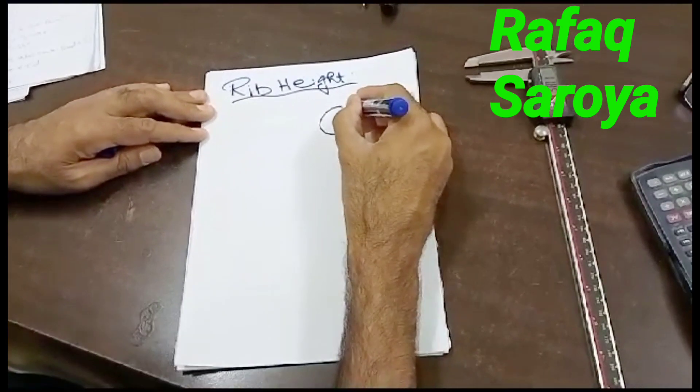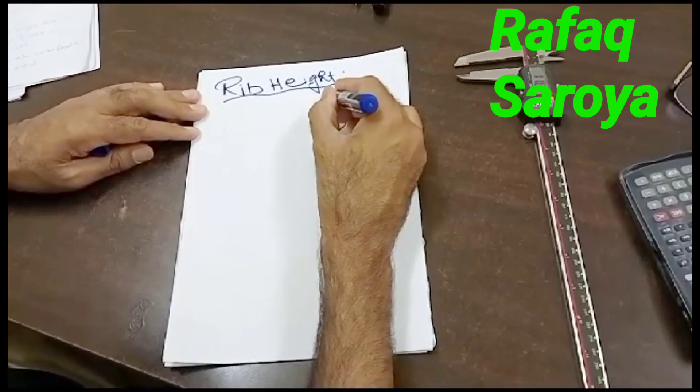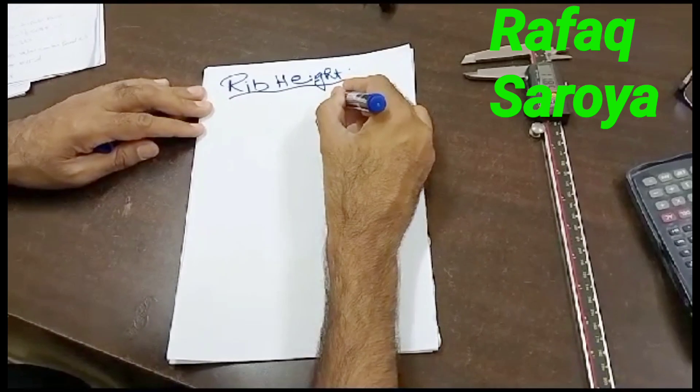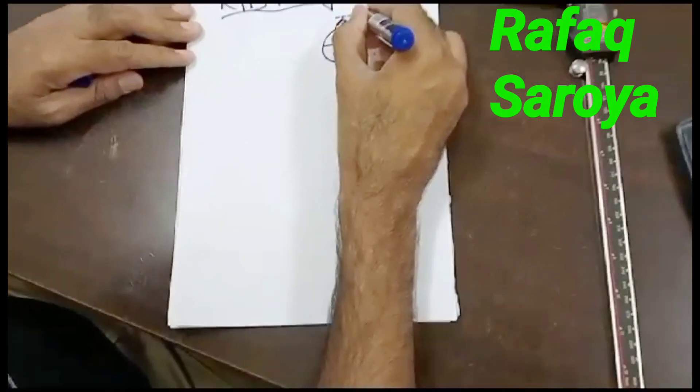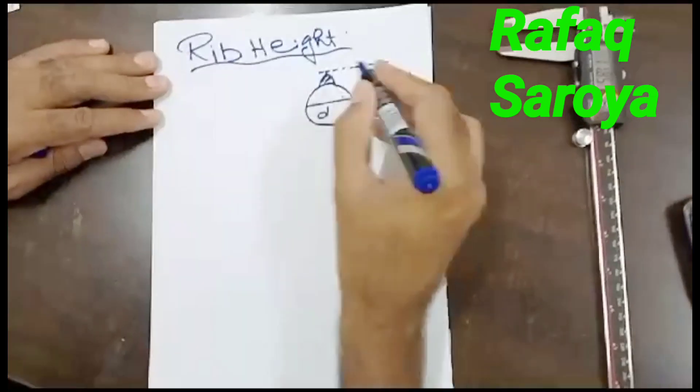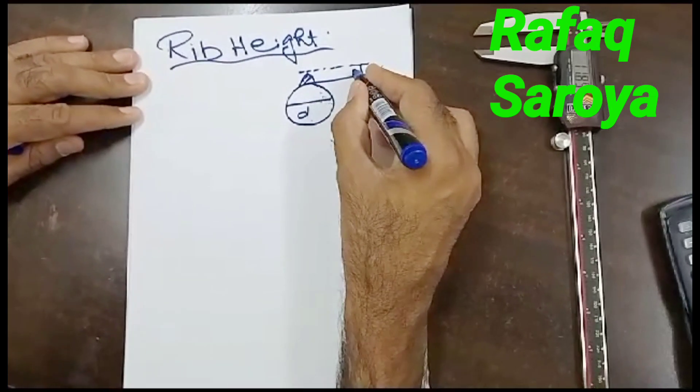This is the core of the steel having any diameter. And this is the rib at the top of this. And this top portion of this rib, and this cross-sectional area...